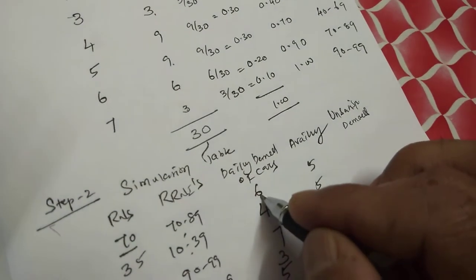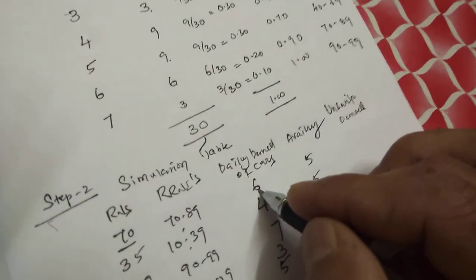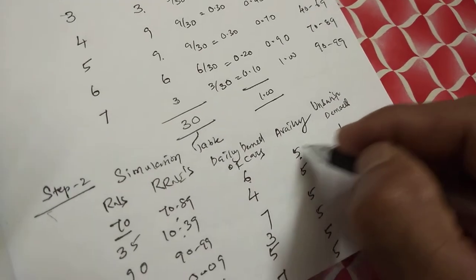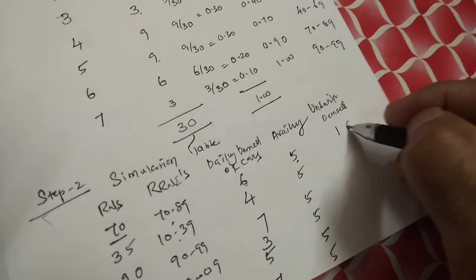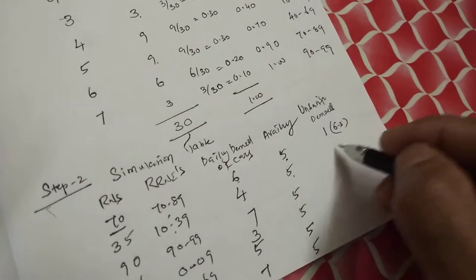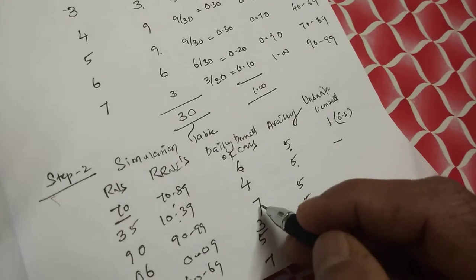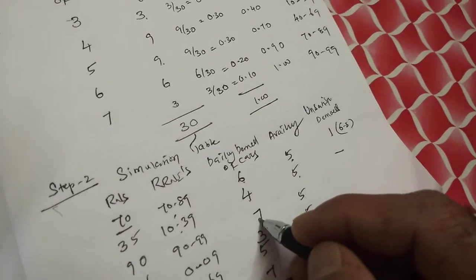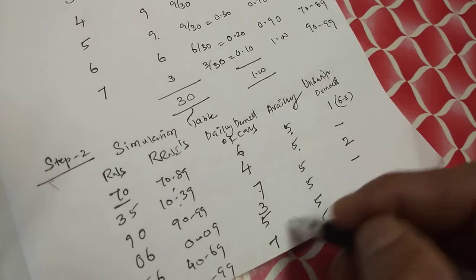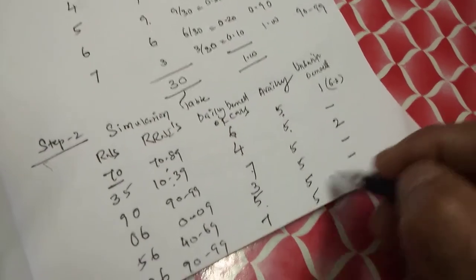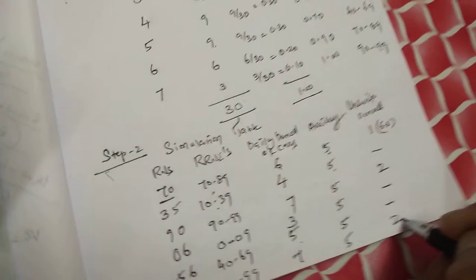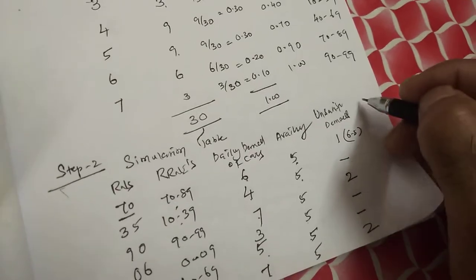Now calculate the unsatisfied demand. Day 1: demand is 6 but availability is 5, so unsatisfied demand is 1 (6 minus 5). Day 2: demand is 4, availability is 5, no unsatisfied demand. Day 3: demand is 7, availability is 5, unsatisfied demand is 2. Day 4: demand is 3, availability is 5, no unsatisfied demand. Day 5: demand is 5, availability is 5, no unsatisfied demand. Day 6: demand is 7, availability is 5, unsatisfied demand is 2.